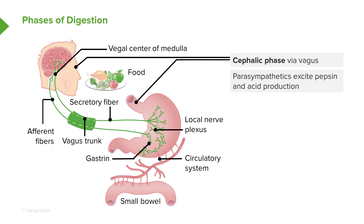That's parasympathetic excitation. It not only increases salivary secretions, but also engages the stomach to start secreting both acid and pepsinogen, which will be converted into pepsin.